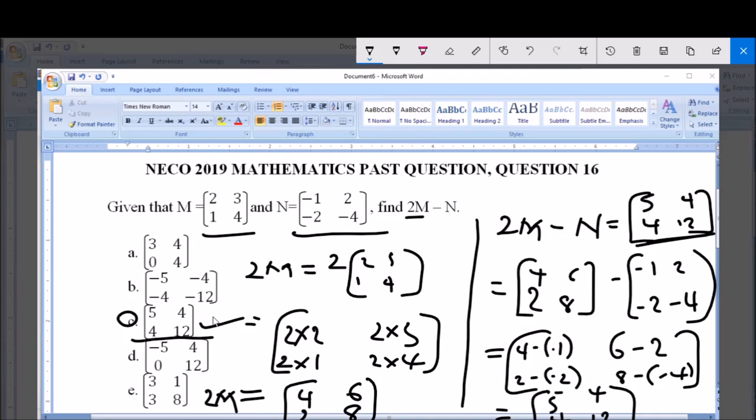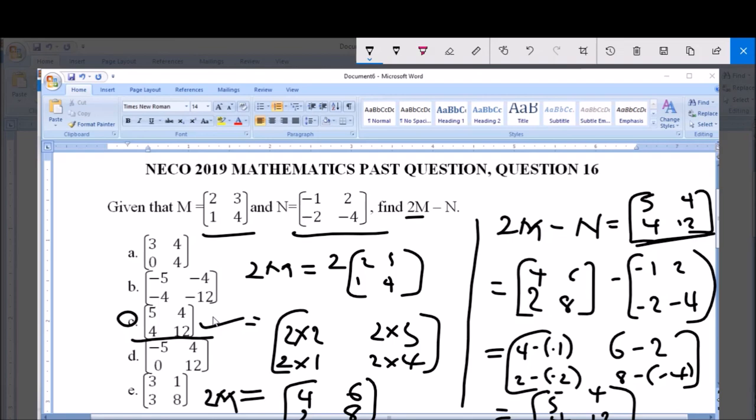So, option C is the correct answer, that is matrix of 5, 4, 4, and 12. Thank you very much and God bless you. Please like, share, and subscribe to our channel for more videos.